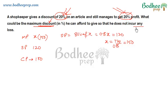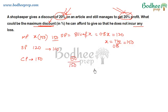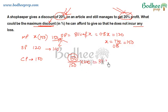The maximum discount without incurring any losses is the case where the selling price becomes 100 (break-even), while the mark price remains 150. The discount amount is 150 − 100 = 50 rupees. Since discount is always calculated on mark price, the discount percentage = (50 / 150) × 100 = 33.33%. That is the answer.